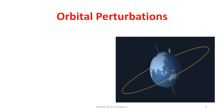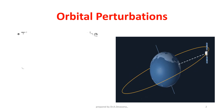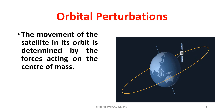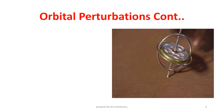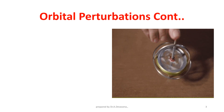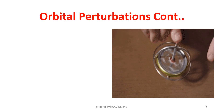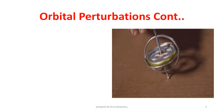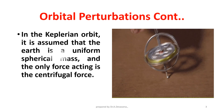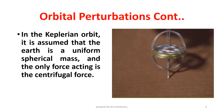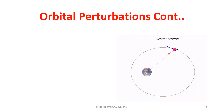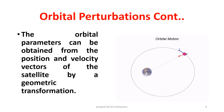The movement of the satellite in its orbit is determined by the forces acting on the center of the mass. In the Keplerian orbit, it is assumed that the Earth is a uniform spherical mass and the only force acting is the centrifugal force. Here it is represented. The orbital parameters can be obtained from the position and velocity vectors of the satellite by a geometric transformation.